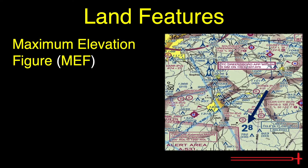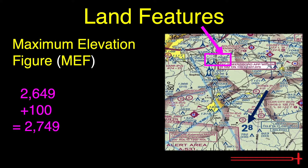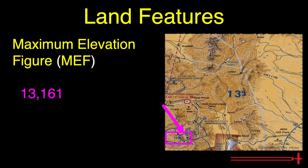Flying at or above the maximum elevation figure, ideally, should guarantee obstacle clearance, assuming one's altimeter is set correctly. When the highest obstacle is man-made, the MEF is determined by taking the elevation at the top of the obstacle, adding a buffer of 100 feet, then increasing to the nearest hundred. If the highest obstacle was made by Mother Nature, we add a buffer of 300 feet instead, then raise it to the nearest hundred.